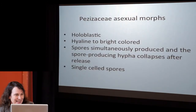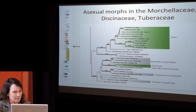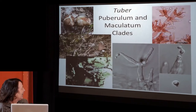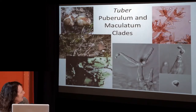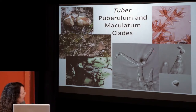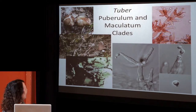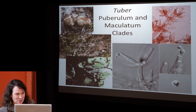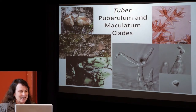To summarize the Pezizaceae asexual morphs: they are holoblastic, hyaline to brightly colored, spores are simultaneously produced, and the spores are single-celled. Moving on to the Tuberaceae, which are shown in green, along with Fischerula — another truffle — in the same phylogenetic area. They all produce mitospore-bearing branches that are verticillate and have scars back from the tips. Interestingly, one produces another mitospore at the tip of the spore being produced, which perhaps gives us an idea of whether it might be functioning as a spermatium.